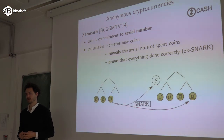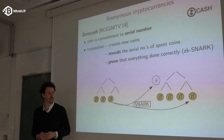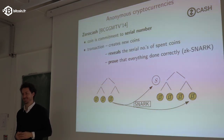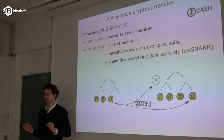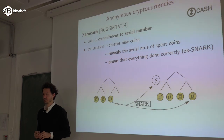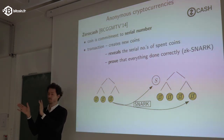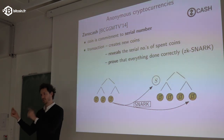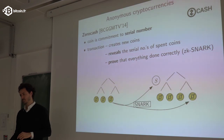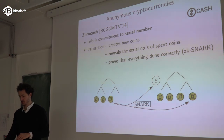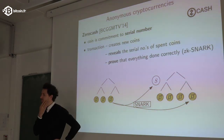Regarding the elliptic curve: Zcash uses a curve that supports pairings — a bilinear map — because verification of the SNARK involves taking group elements from the parameters and elements of the proof and checking that certain pairings work. Zcash uses proof-of-work.